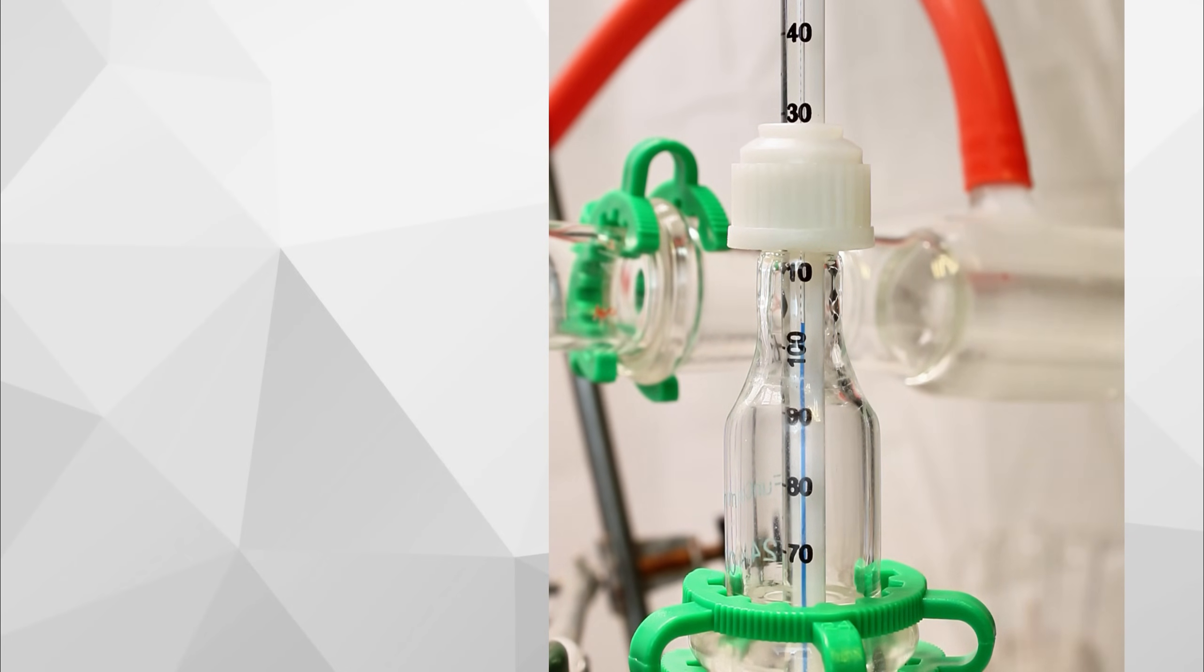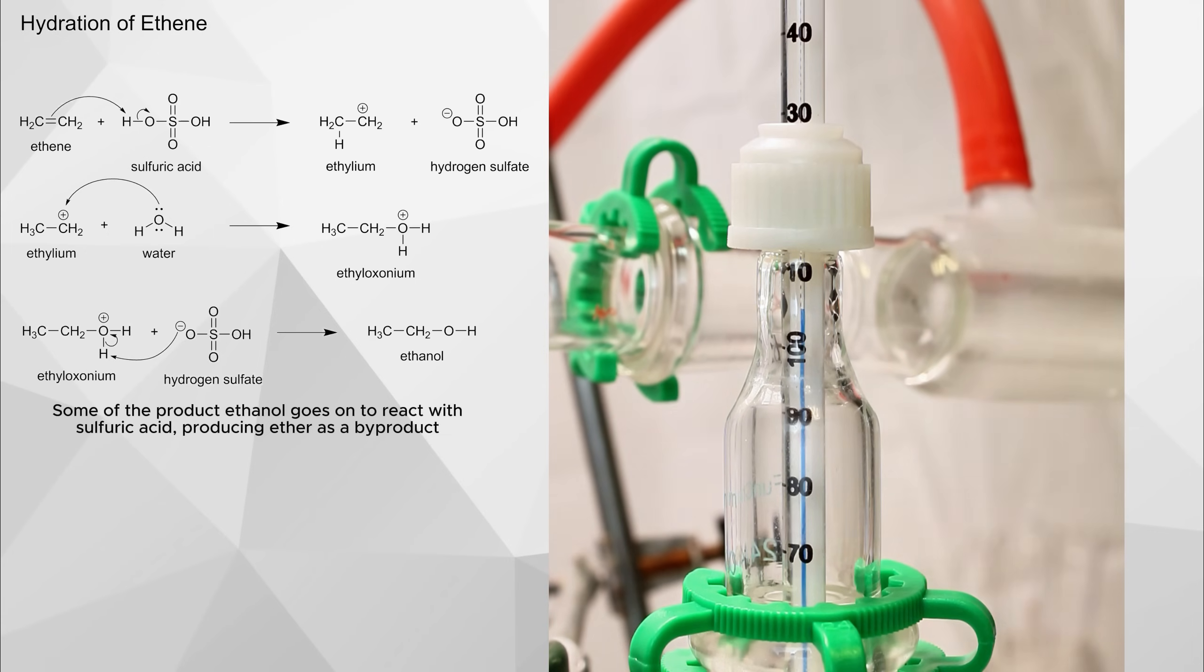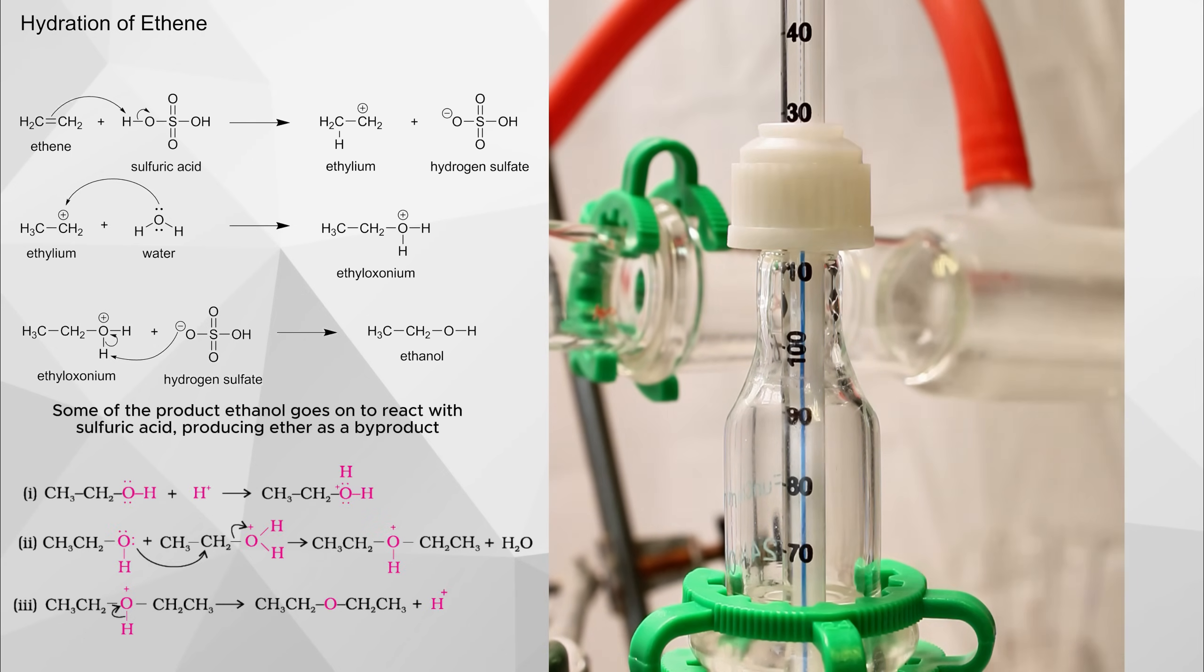Most ether produced industrially is actually a product of the hydration of ethylene to ethanol. This process, however, is the opposite, and proceeds by dehydrating ethanol to ether using sulfuric acid in a three-step reaction.